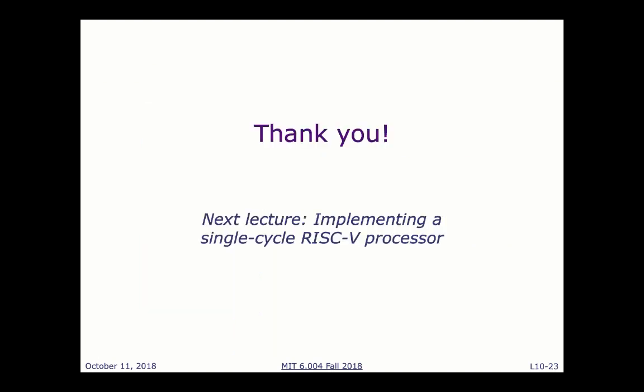In RISC-V, main memory is laid out with the text region (program code) starting at address zero, then static region, then the heap growing toward higher addresses, and the stack at the top of the address space growing toward lower addresses — so both can grow without conflicting until you exhaust the whole space. The stack pointer points to the top of the stack, the global pointer points to the static region, and the program counter is somewhere in the text region. Next lecture we'll start implementing a RISC-V processor. Good luck on the quiz!